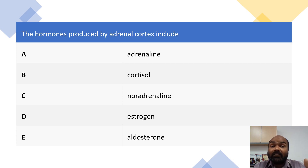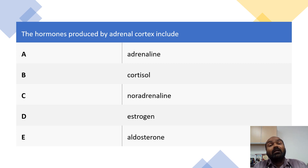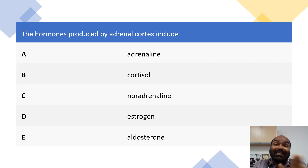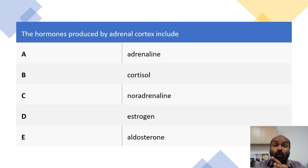So what is the function of aldosterone? Aldosterone exerts its effect on the principal cells in the collecting ducts of the nephron. It causes reabsorption of sodium into the body and excretion of potassium into the nephron. So we excrete potassium and we absorb more sodium.